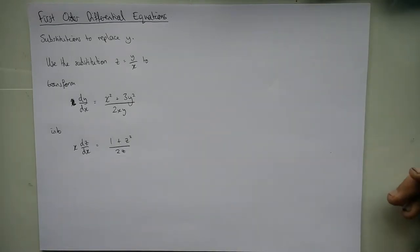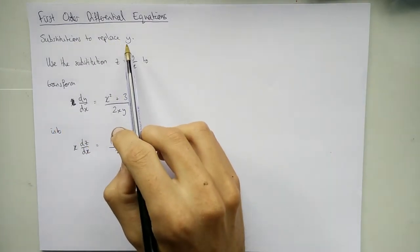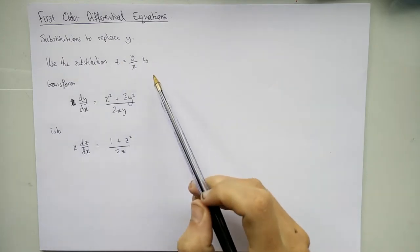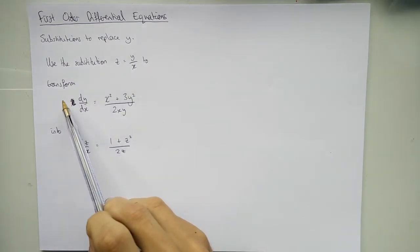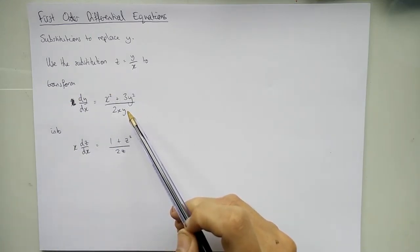In this video we're talking about first order differential equations, and this time about substitutions and how we can remove y. I've already read out the question because it's quite long. This is a differential equation we're trying to solve. It's in terms of y and x and we can't use any methods we've previously learnt to solve it.